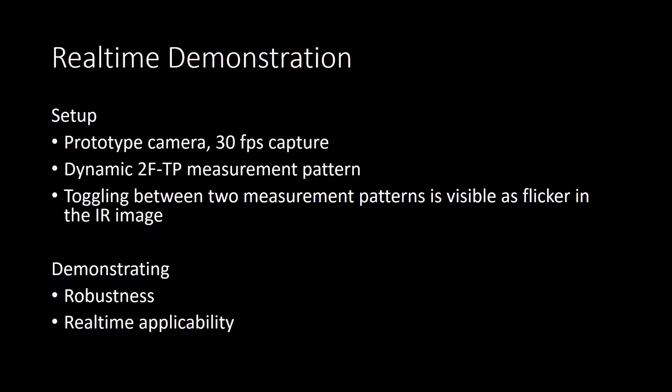We demonstrate a real-time implementation of our approach as follows. We use a prototype camera with a 30 frames per second capture. We use a dynamic two-frame two-pass measurement pattern that we discussed in the main paper. This pattern is composed of two individual measurement patterns, and the toggling between these two patterns is visible as flicker in the infrared image. The real-time demonstration shows that our model is robust and is working in real-time.